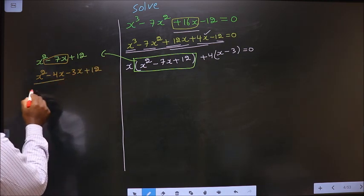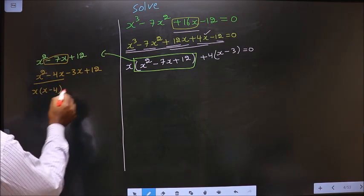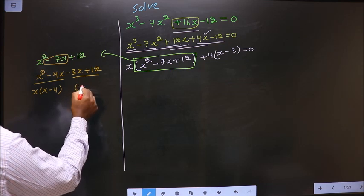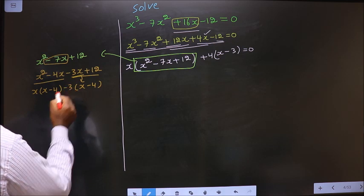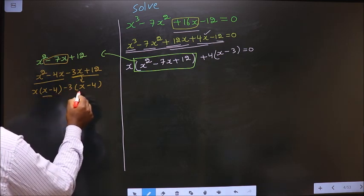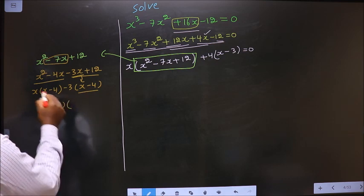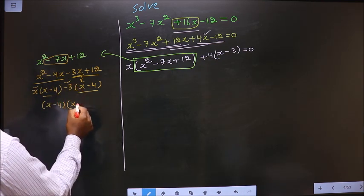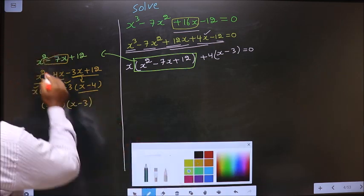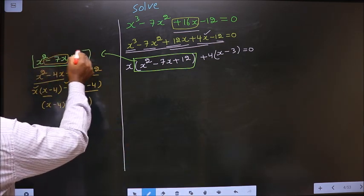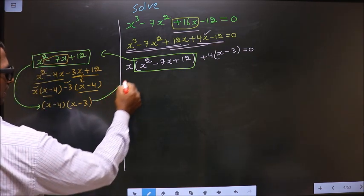Now, from these 2 terms take out x common — you get x minus 4. Whatever you have got here, here also you should get the same thing. So from this, x has gone inside and outside is minus 3. Now you take out x minus 4 common, so here you have x and here you have minus 3. So now, in place of this quadratic, I replace this over here.